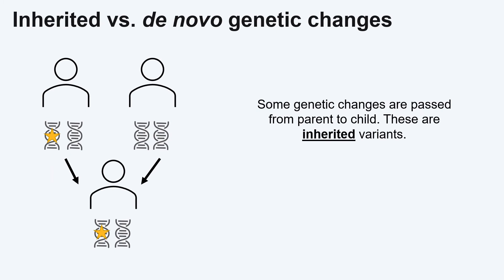Changes in our DNA can be passed on from a parent to a child, or they can be unique to an individual. If a variant is passed from a parent to a child, it is said to be inherited. For example, an individual with a variant that causes Duchenne muscular dystrophy, a disease that affects the muscles, can pass the variant to their child. If their child also has the variant, they may also go on to have Duchenne muscular dystrophy.